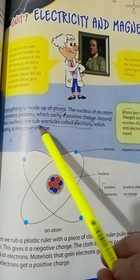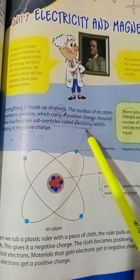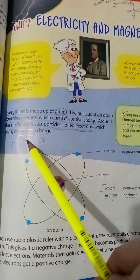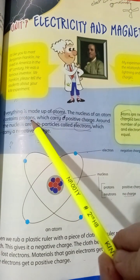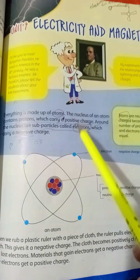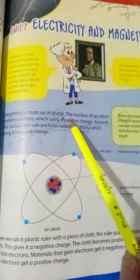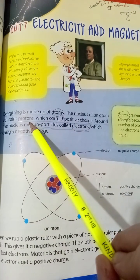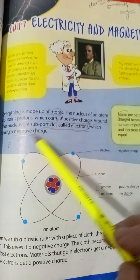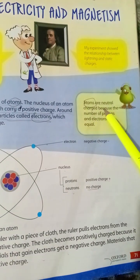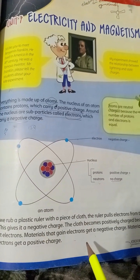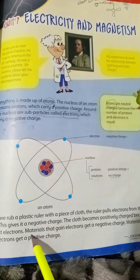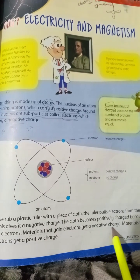Around the nucleus are particles called electrons, and electrons have a negative charge. To remember: protons start with P, so they have a positive charge. Electrons are negative. The atoms are neutral charge — this blank is important. Materials that gain electrons get a negative charge.